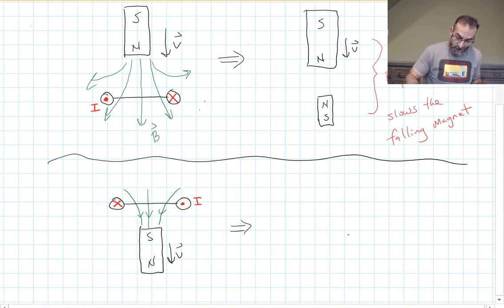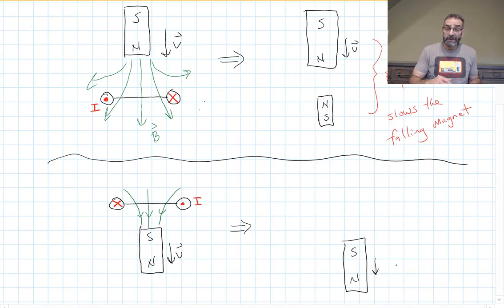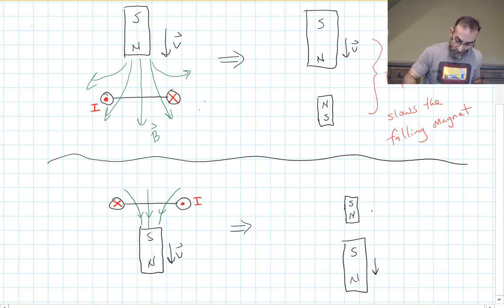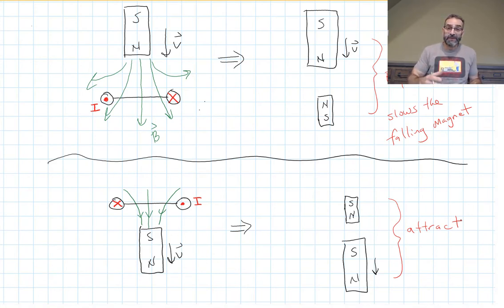That means my falling magnet looks like that same as it does in the real situation. And my loop of wire actually behaves like a little electromagnet. But this time, the north end is down. It has switched polarity. And what do I get here? An attractive force. What does that do? It slows the falling magnet.